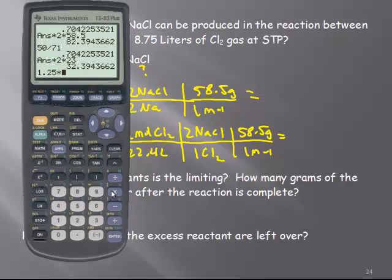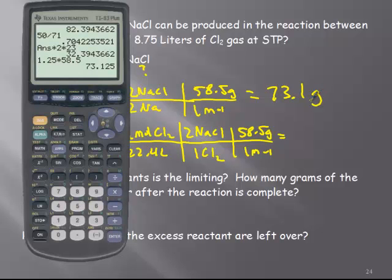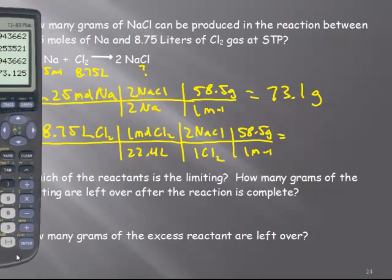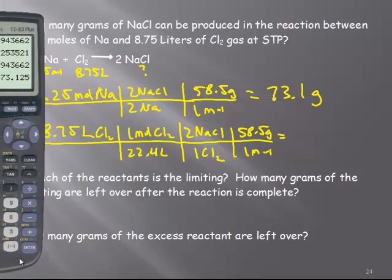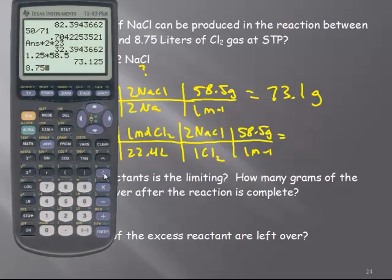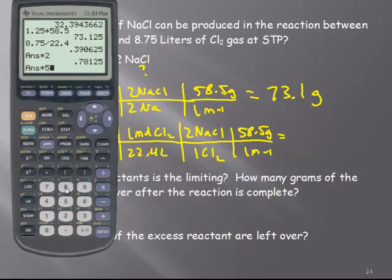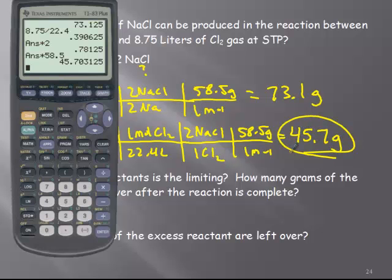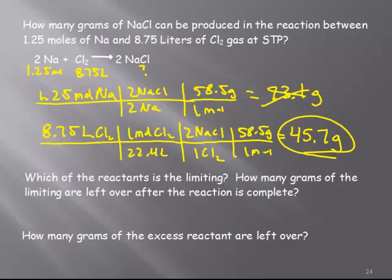1.25 times 2 divided by 2 times 58.5, and I get 73.1 grams. I don't have a reference this time, so I have to calculate the other. Divided by 22.4 times 2 times 58.5, and I get 45.7 grams. That's the right answer — I can't possibly make 73 grams because once I make 45.7 grams, all of the chlorine is used up. So the chlorine is the limiting reactant again, meaning zero grams of chlorine are left over.